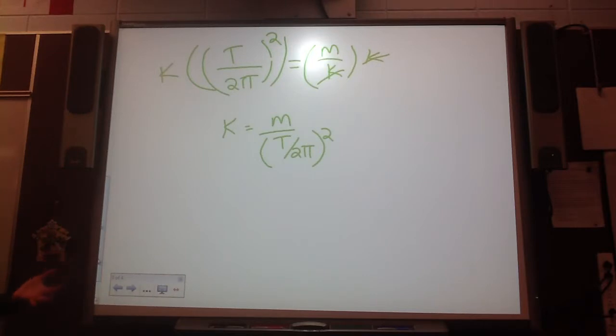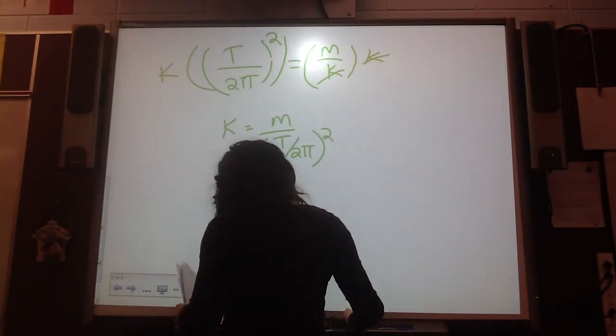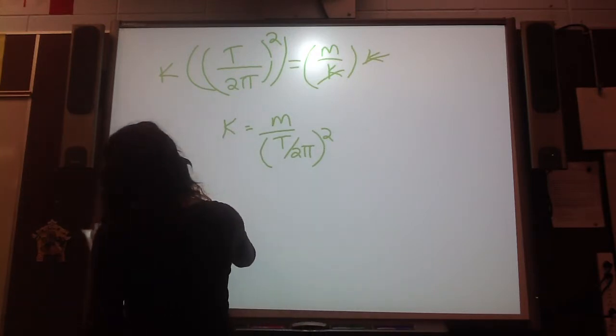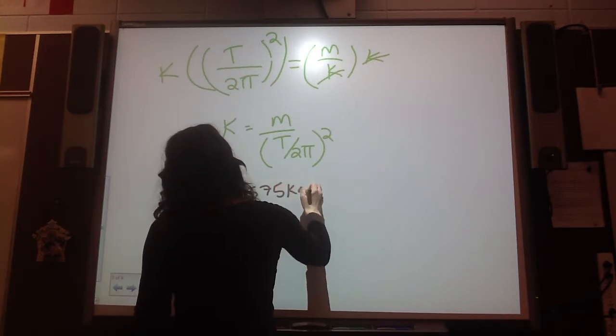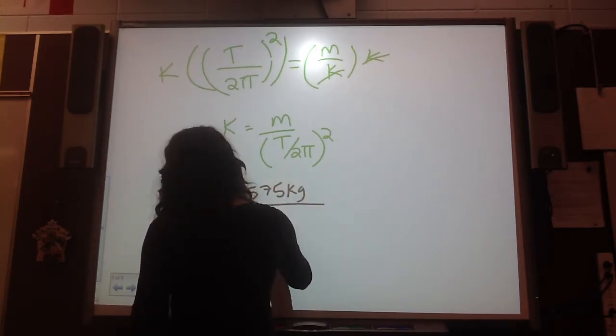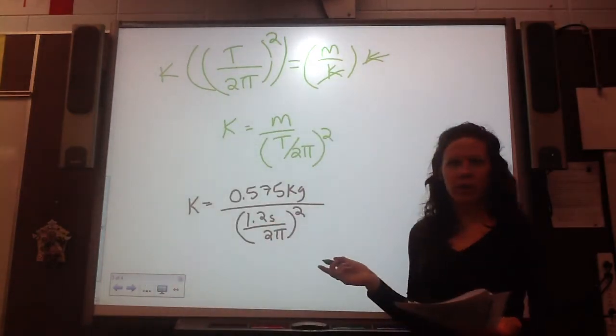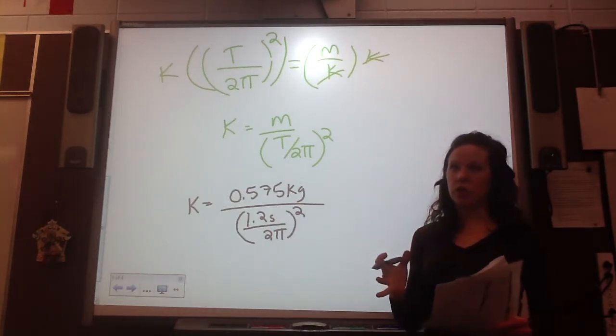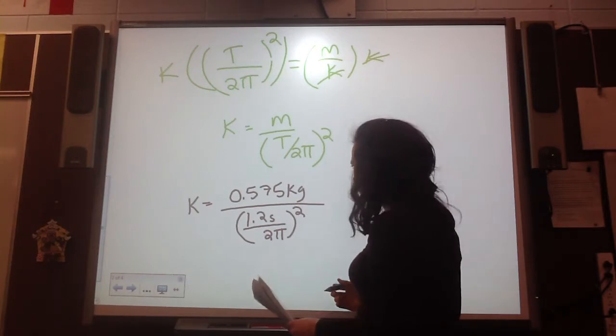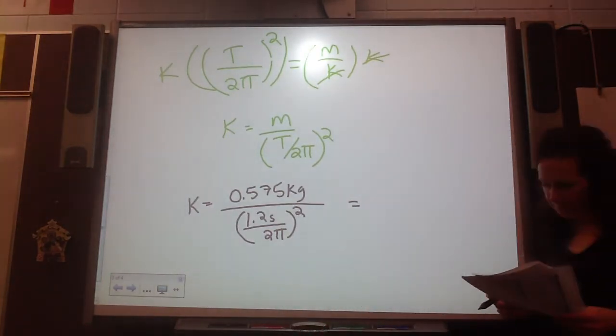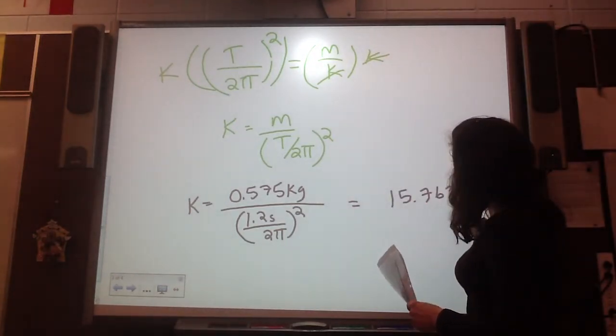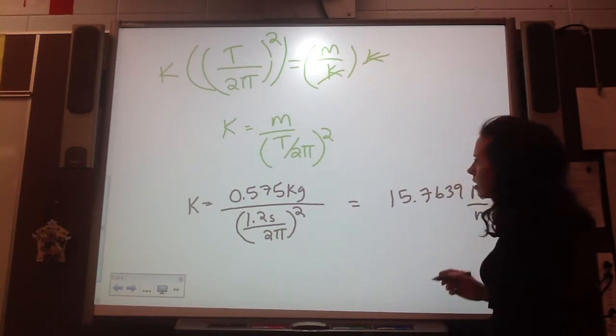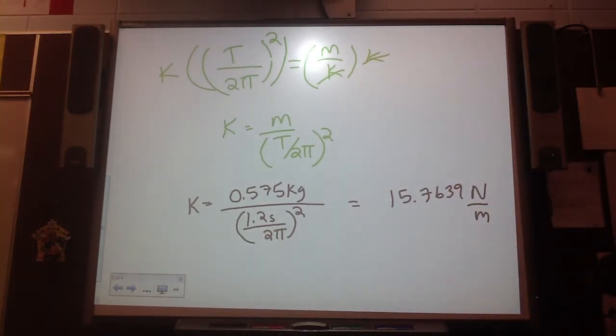So now I can put in my values into that. So K is equal to 0.575 kilograms, all divided by 1.2 seconds divided by 2π, and all of that is squared. So just be careful with your calculator, making sure you're doing enough brackets or doing multiple steps. This should equal 15.7639 newton meters, because this is our K. So we're dealing with newton meters when we're doing K.